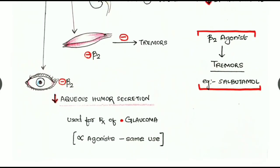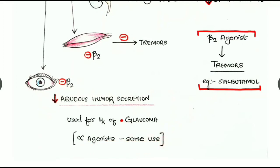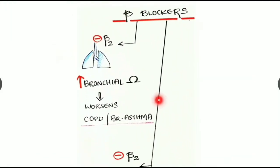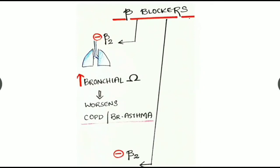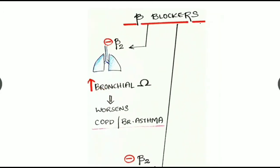In the eyes, inhibiting beta-2 receptors causes reduced aqueous humor secretion. Hence beta-2 blockers can be used for treatment of glaucoma. Alpha agonists have the same use of reducing aqueous humor secretion and can also be used alongside beta-2 blockers for glaucoma. In the lungs, beta blockers inhibit beta-2 receptors, causing increased bronchial resistance, worsening COPD and bronchial asthma.